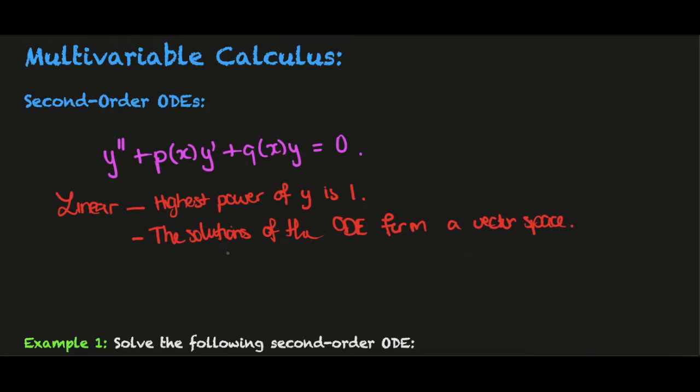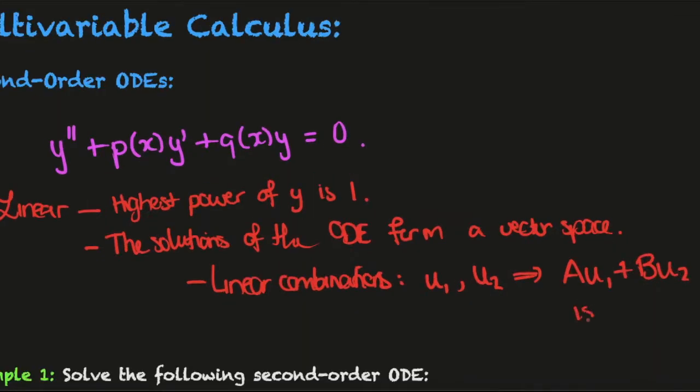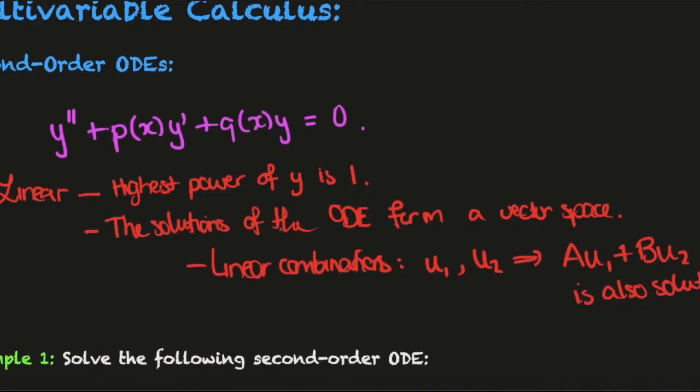What can you do in a vector space? You can take linear combinations. If you have one solution u1 and another solution u2, then a·u1 plus b·u2 is also a solution, where a and b are scalings. This will be important later.